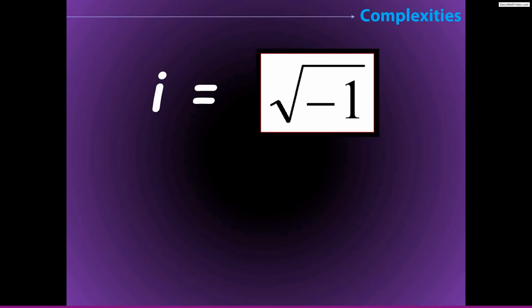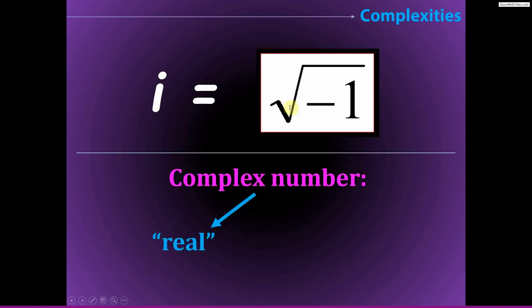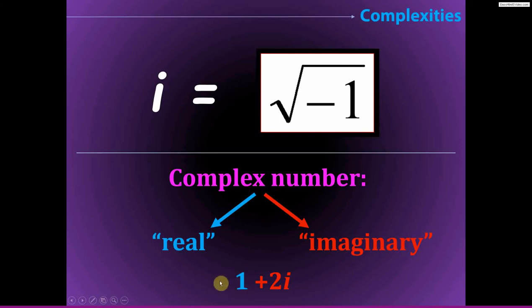The square root of −1 is undefined and doesn't really exist — it's a construction that mathematicians have come up with to conveniently solve problems that would otherwise be very difficult. When we have this imaginary operator, the square root of −1, this gives us a complex number, which has a real part and an imaginary part. For example, the complex number 1 + 2i is not the sum of two numbers; it's actually a single number with two parts.